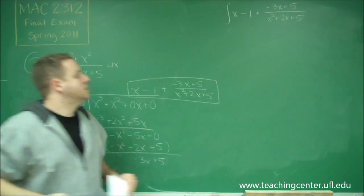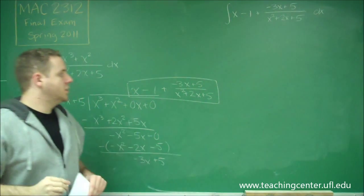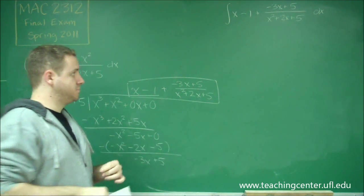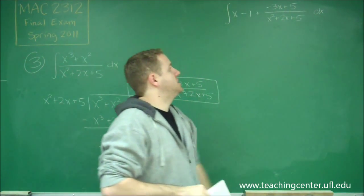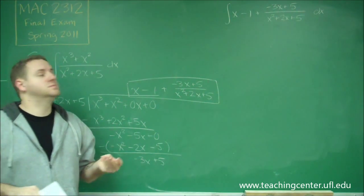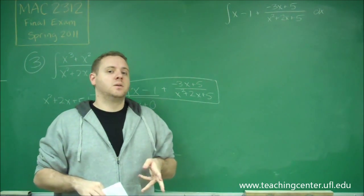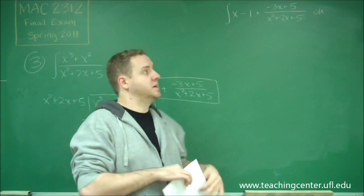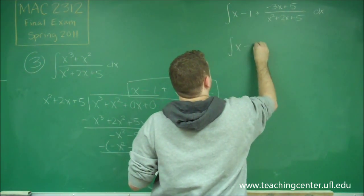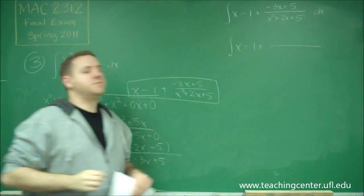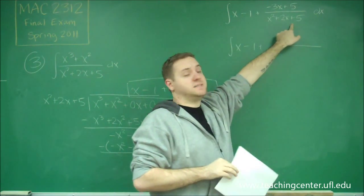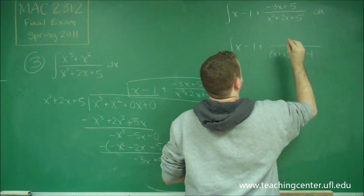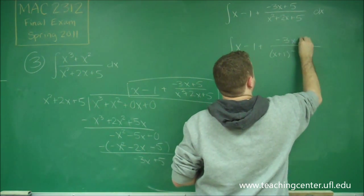Our denominator x squared plus 2x plus 5 is not factorable, so this is not going to be a partial fractions problem. Instead, this is going to be some combination of natural log or arctan type things. In this case you always want to complete the square in the denominator. A perfect square would be x squared plus 2x plus 1, which is just x plus 1 squared, so we have 4 extra. This factors into x plus 1 squared plus 4.